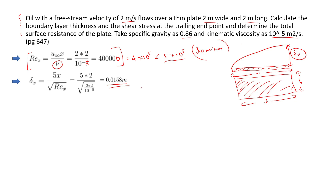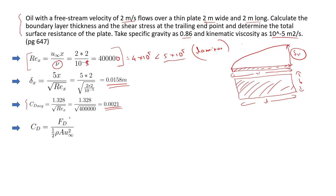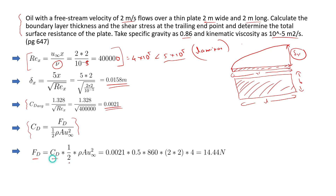Now let us find the average skin friction coefficient, or drag coefficient. It is given as 1.328 divided by the square root of Re_x, which equals 1.328 divided by √(4×10^5), giving C_d = 0.0021. Using the definition C_d = F_d/(half rho A u_infinity²), we can find F_d. F_d equals 0.0021 times 0.5 times 860 times 2 times 2 times 4, which gives 14.44 N. This is the total drag force on the plate.